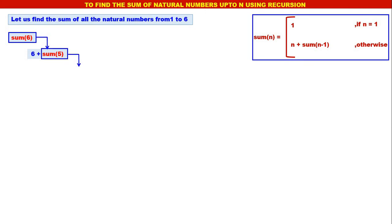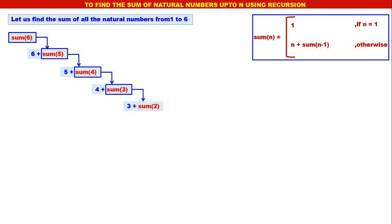What is sum of 5? It is 5 plus sum of 4. What is sum of 4? It is 4 plus sum of 3. What is sum of 3? It is 3 plus sum of 2. What is sum of 2? It is 2 plus sum of 1. What is sum of 1? When n is equal to 1, it is 1. So sum of 1 is 1 — that is the terminating condition of the recursion.